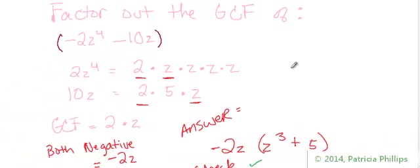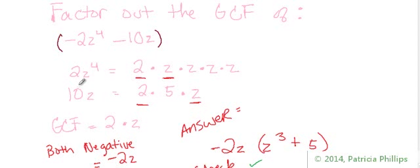There's one last problem. Factor out the greatest common factor of negative 2z to the power of 4 minus 10z. You might see something like this with parentheses or without, but it is still a binomial with two monomials on the inside. We view this as one term together. We're going to find the greatest common factor and then take it out and rewrite the problem using the distributive property. We'll leave the negative signs off for now and find the GCF as if these were positives first.